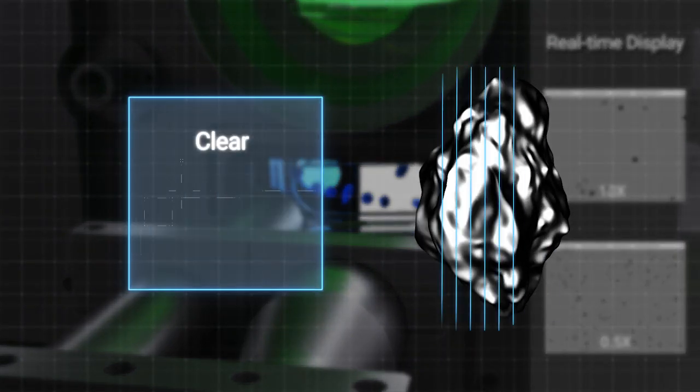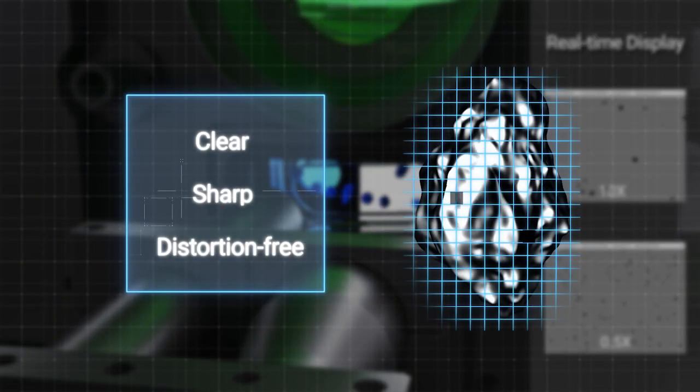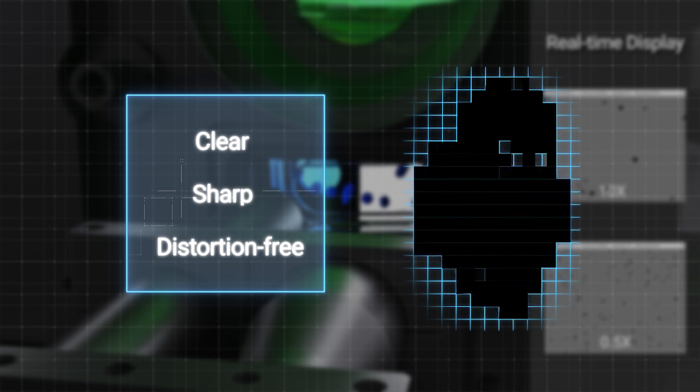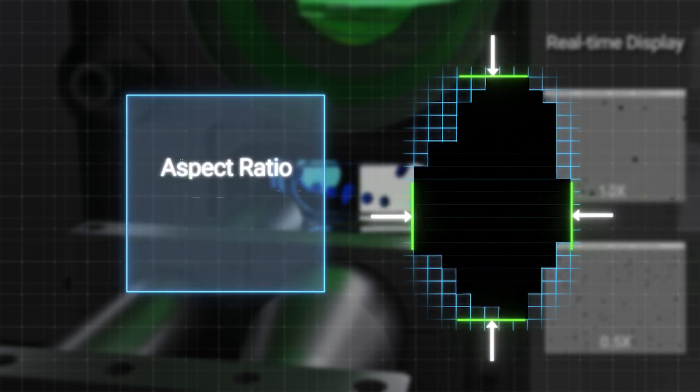Look how clear, sharp and distortion-free these particle images are. The most important and commonly used morphology parameters such as aspect ratio, circularity and others can be easily acquired with this method.